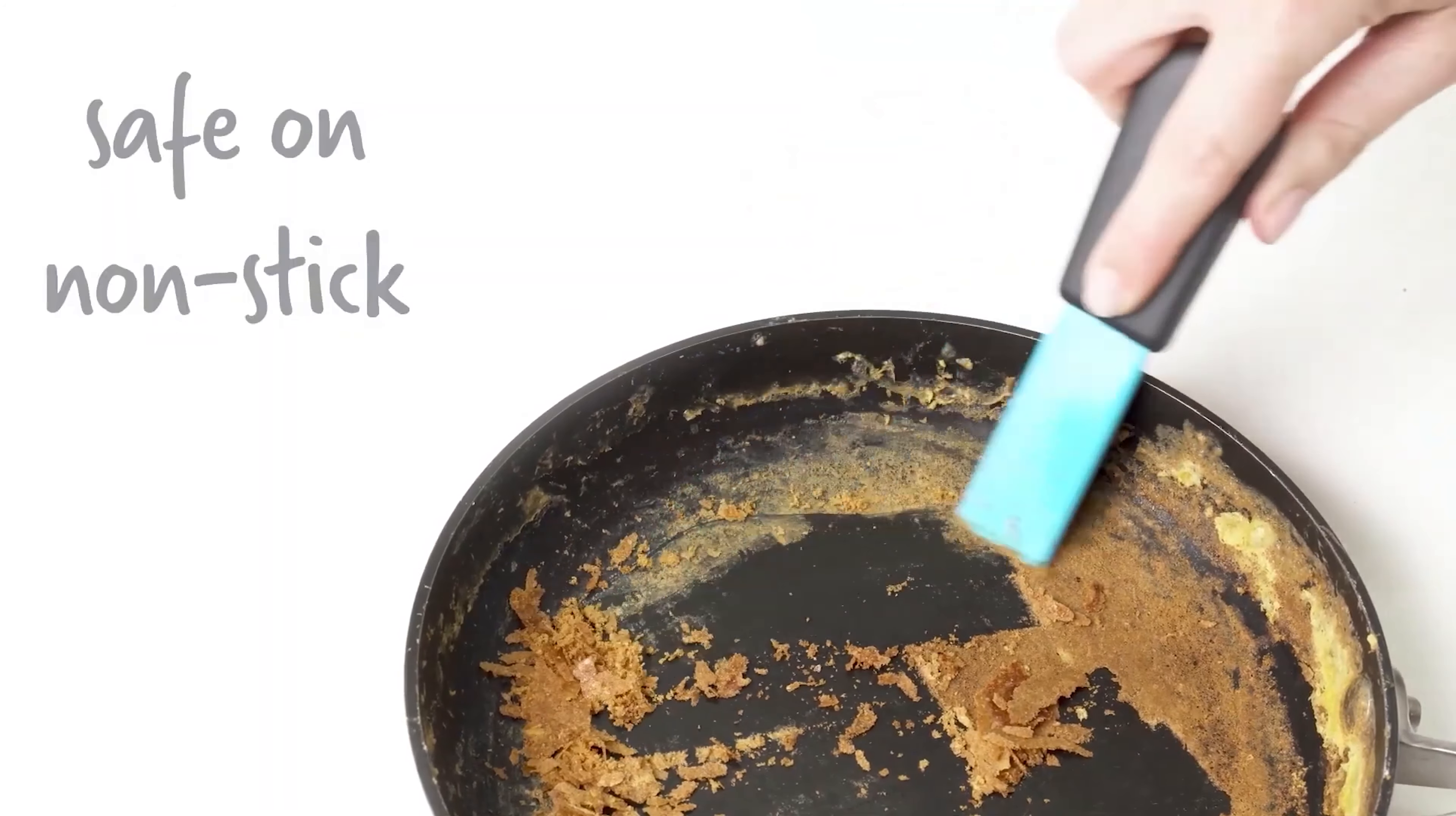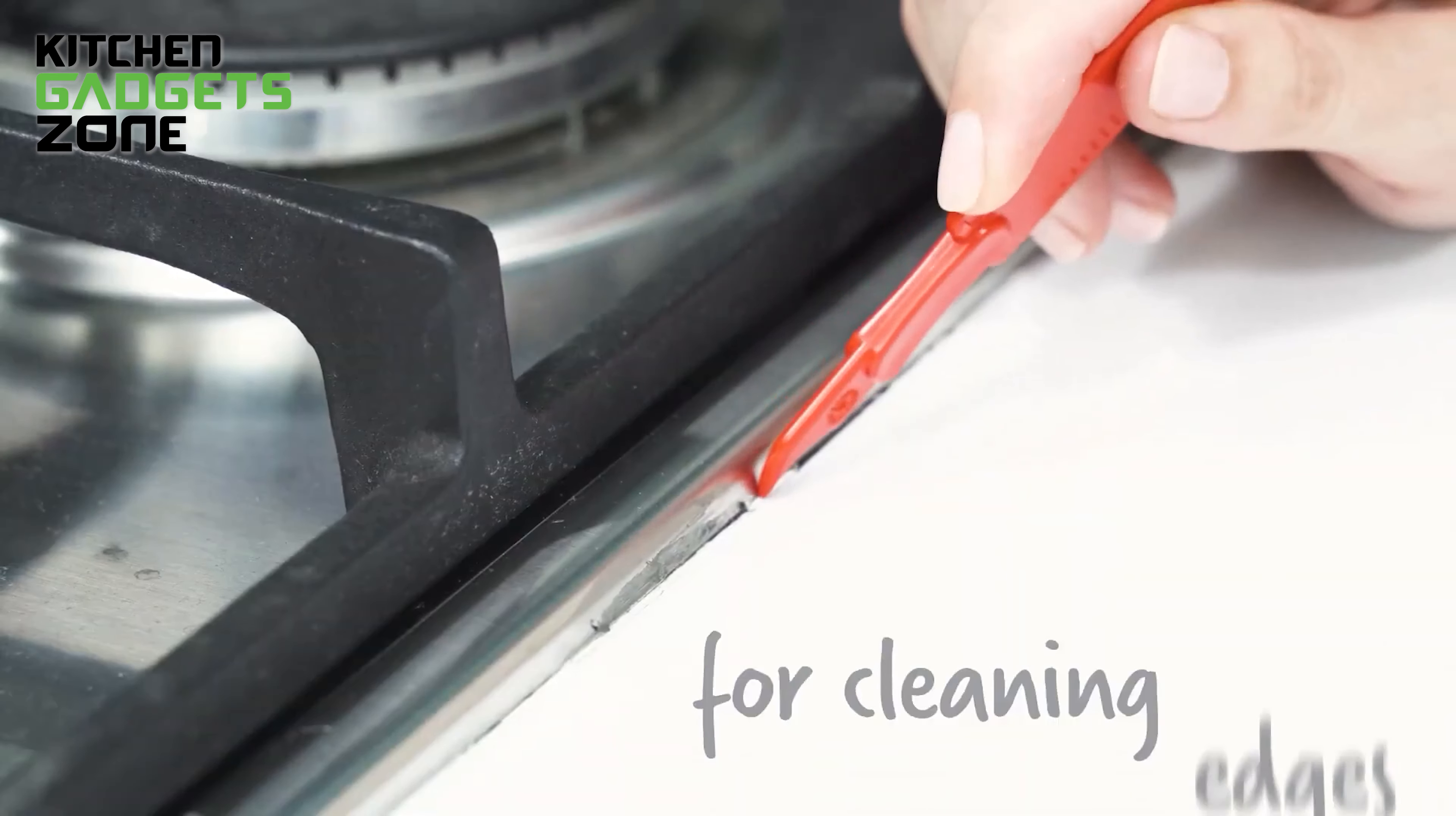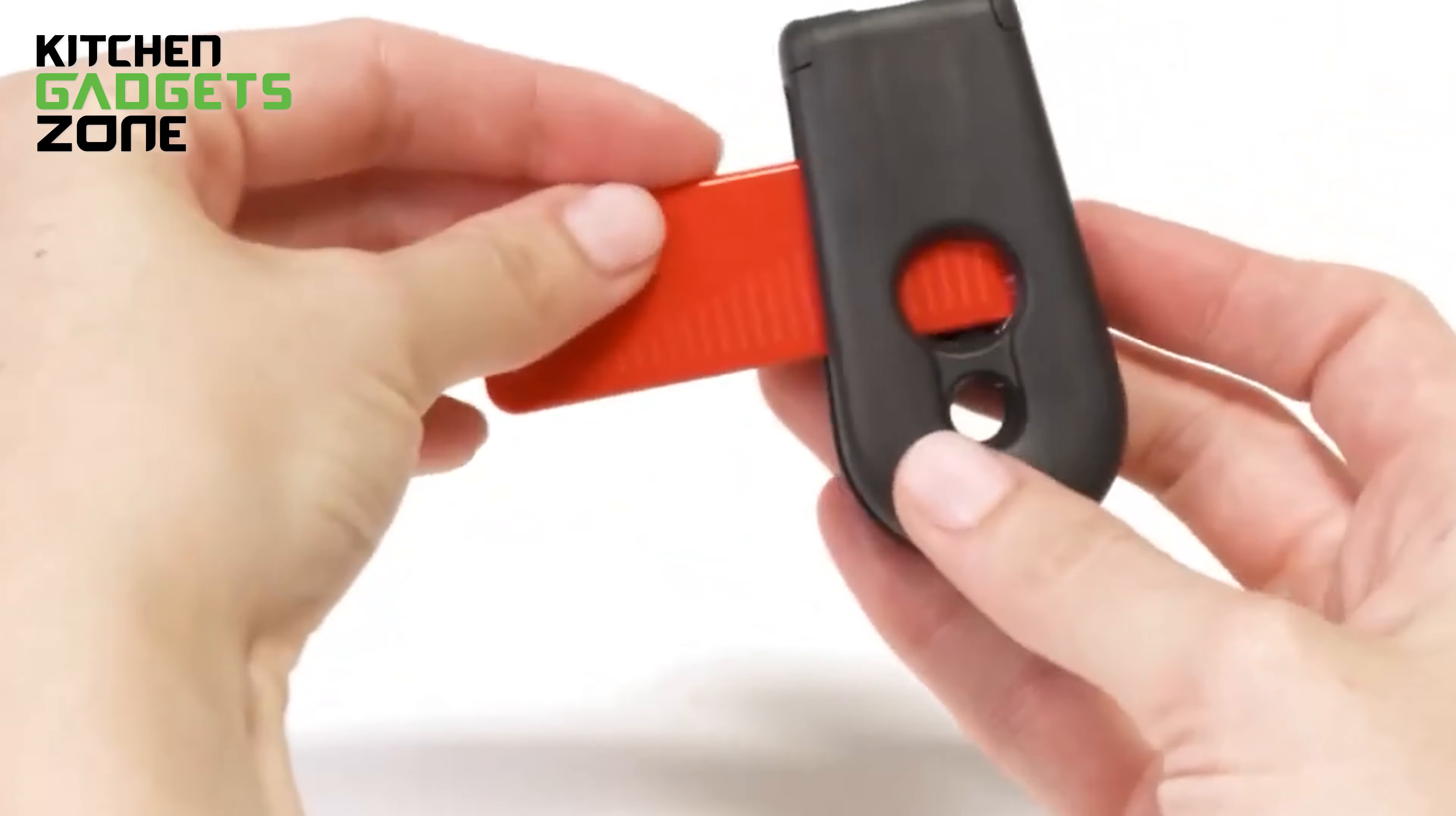This tough little tool tackles even the most stubborn messes with ease. Its non-scratch scraper edge is gentle enough for non-stick surfaces, yet tough enough to remove stickers, labels, and caked-on food from your pots, pans, and countertops. Kleena's secondary hook scraper handles those hard-to-reach corners around the stove and sink. The built-in sharpener in the handle creates over 1,000 fresh scraping edges, so you'll always have a sharp tool at your disposal.